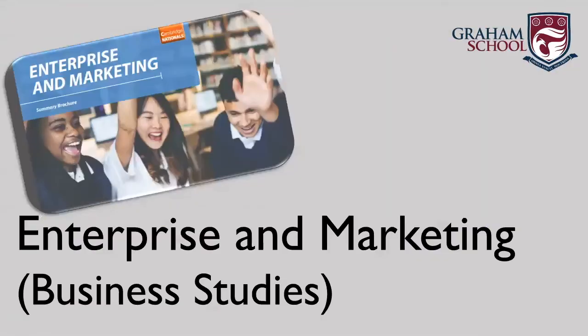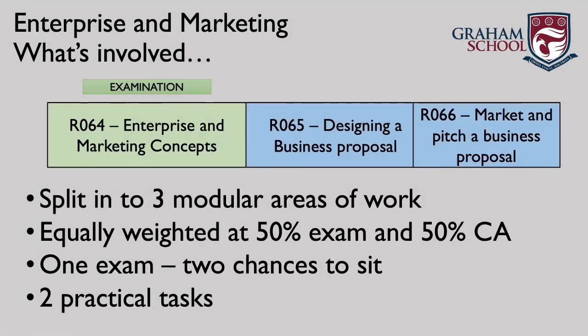The third option is Enterprise and Marketing, which is the same as Business Studies. Similar to Creative iMedia, it is split into three equally weighted sections. This qualification is for anyone who wants to develop knowledge and practical skills in business, and will prepare you for creating your own business venture or studying business at A Level. The three units are: RO64 Enterprise and Marketing Concepts (the examined unit), RO65 Designing a Business Proposal, and RO66 Market and Pitch Business Proposals.